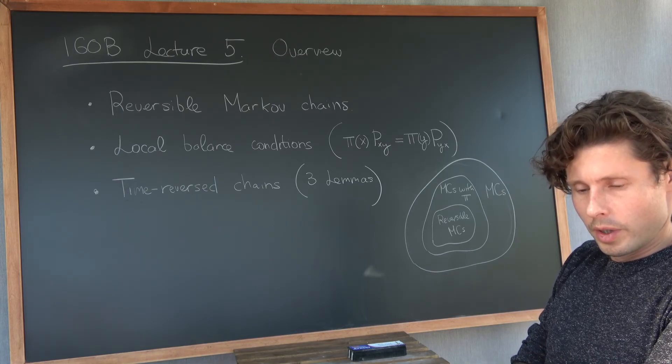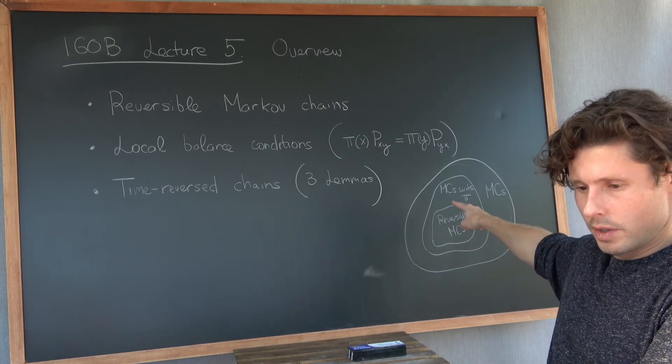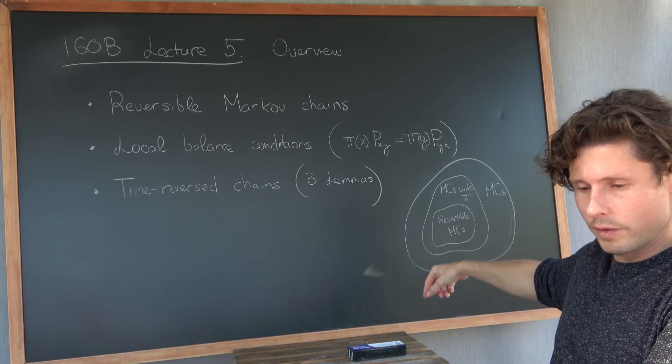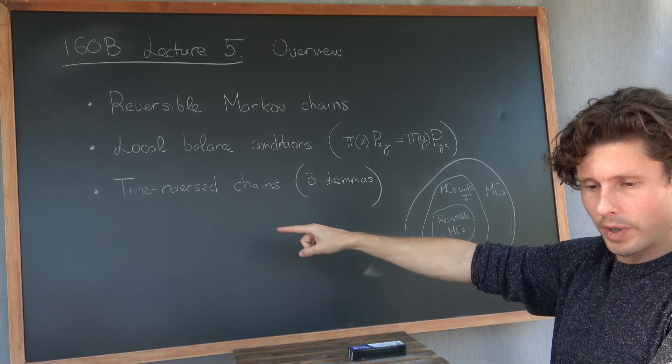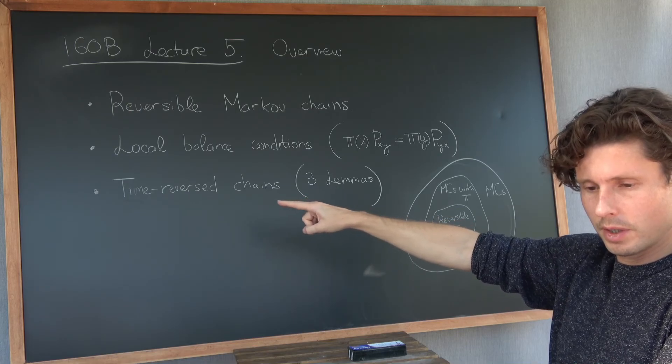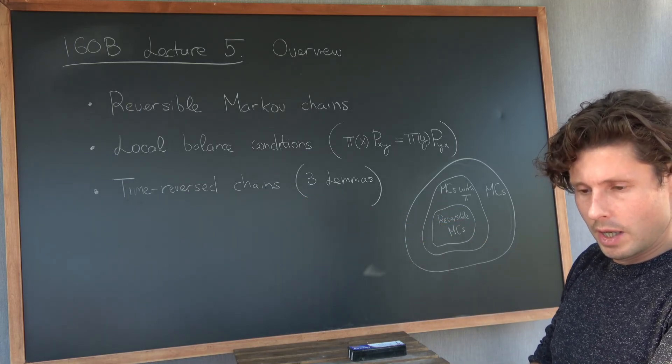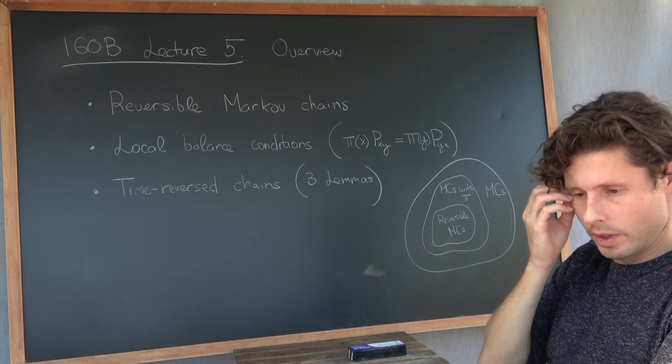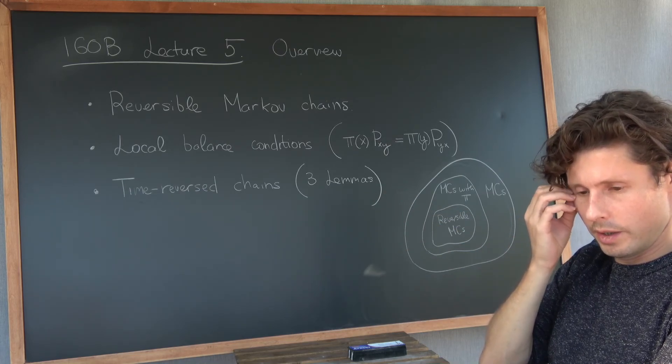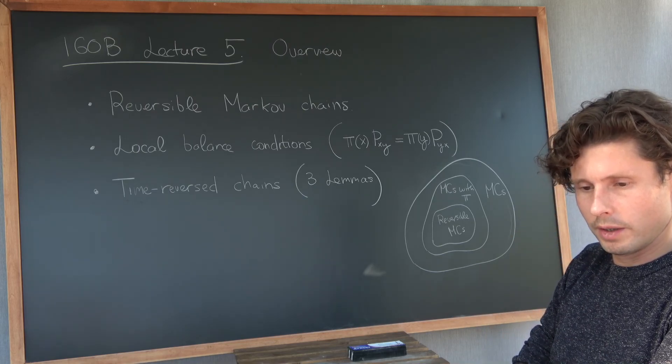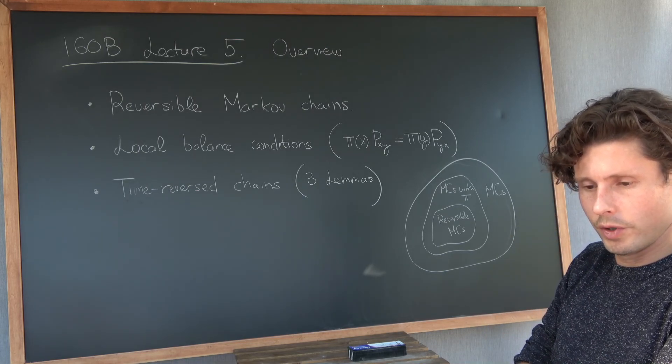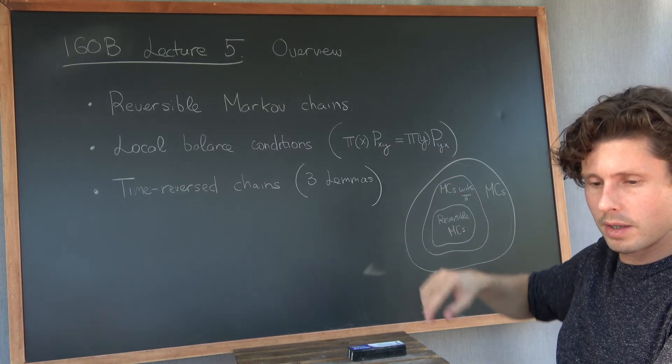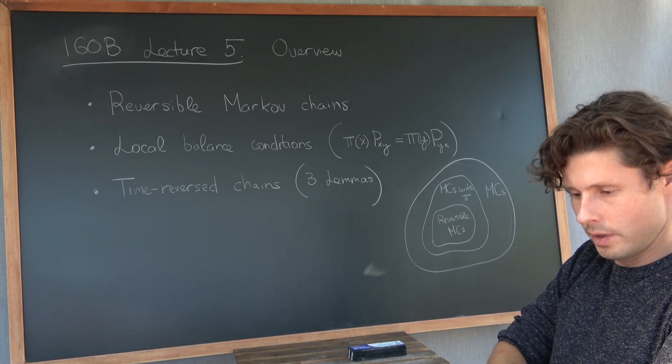So we're going to begin digging into this subset here, this set of reversible Markov chains, but we're going to have to get there slowly. First, we're going to go through this definition of a time reversed Markov chain. And I'm going to do this with three lemmas. Hopefully those three will then motivate the concept of reversibility and then tie it back to this local balance relation. So I'll stop here.